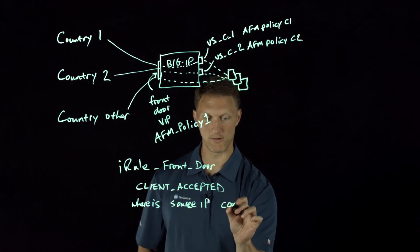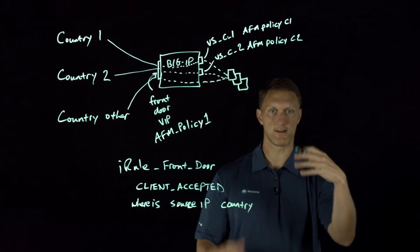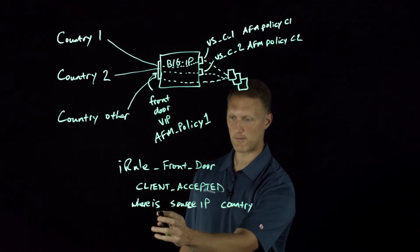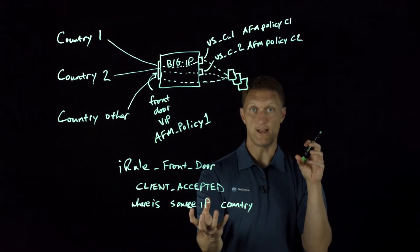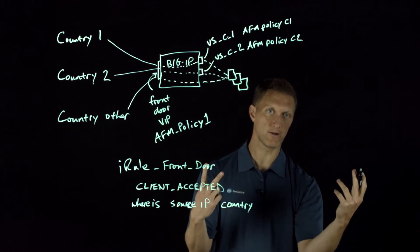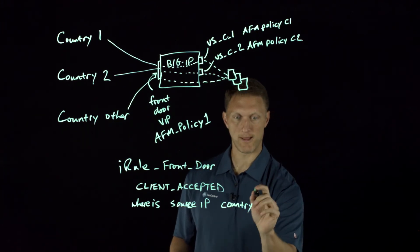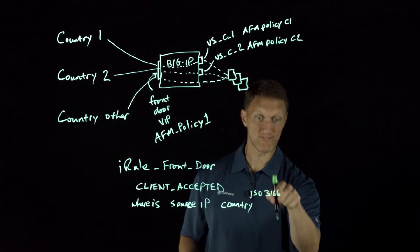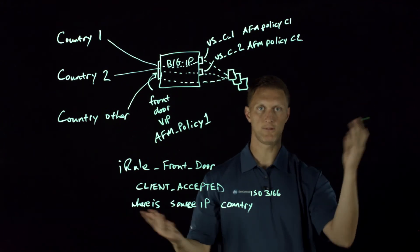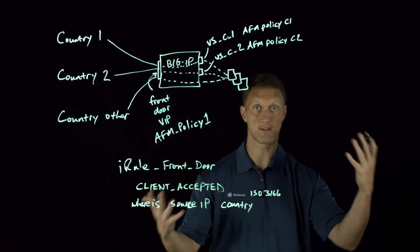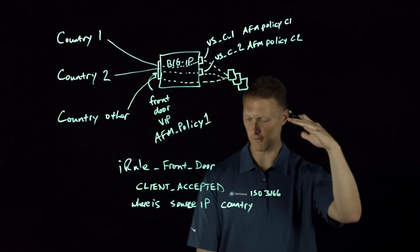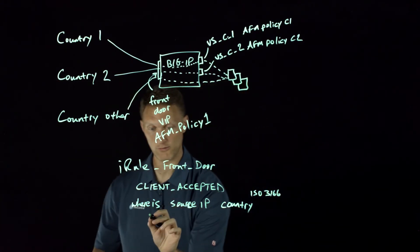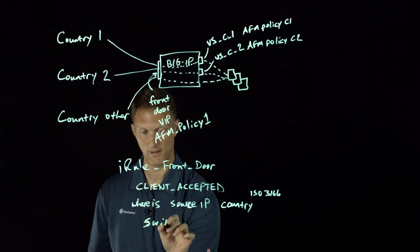One of the things that whereis gives you is a country code. It also gives you state-level or even city-level detail — as much detail as it can. What you can do is use the whereis command, look at the source IP, and then pull out the exact country code. That's going to be a two-letter code based on the country — ISO 3166 actually defines the country code standard. You can look that up to see, for example, what the country code is for the United States of America. ISO 3166 will give you the two-letter code for all the different countries.